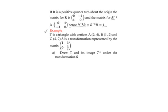Let us look at the given example. We are told T is a triangle with vertices A(2, 4), B(1, 2), and C(4, 2). S is a transformation represented by the matrix [1, 1; 0, ½].